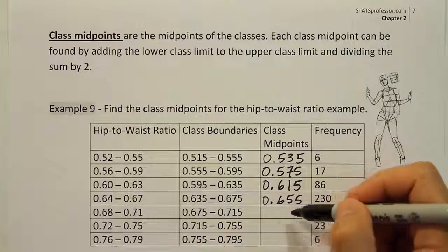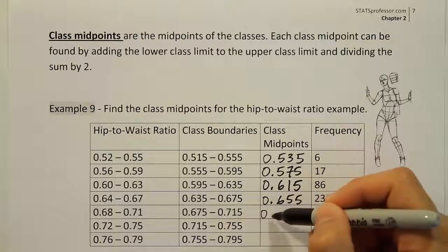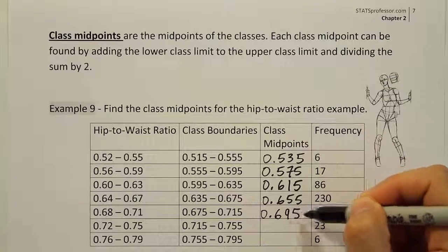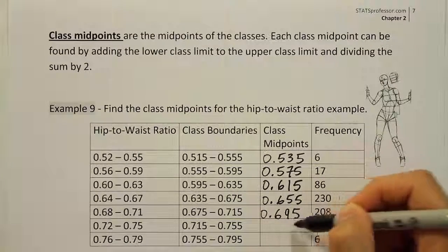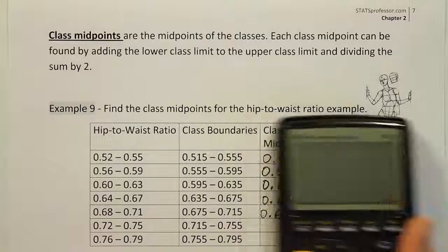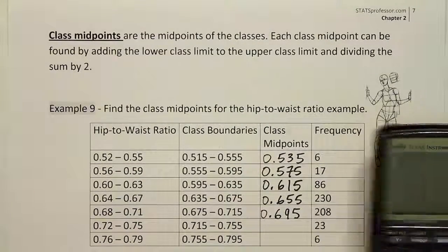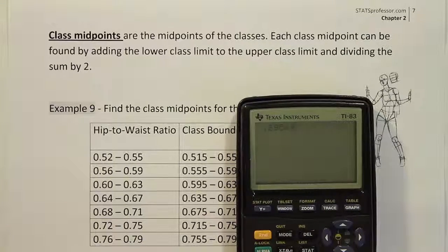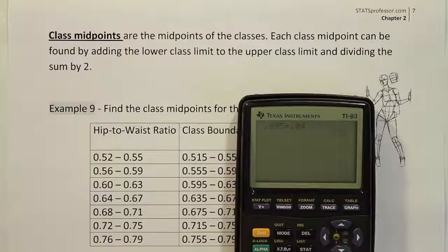What would happen if I added .04 to this? I would get 0.695 if I added .04, right? Let's add .04 to the last one and see what we get. So our last midpoint was .695, so we do .695. If we add .04, we're going to get the right answer, .735.